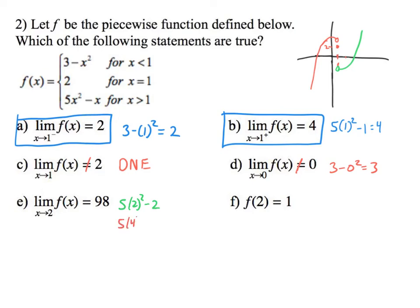All right, what does that give us? Well, that gives us 5(4), because 2² is four, minus two. That gives us, what, 20 - 2, which gives us 18. All righty, so does this equal 98? No, it's 98.